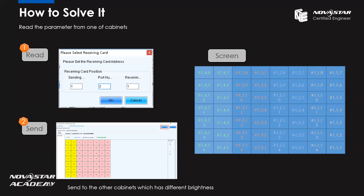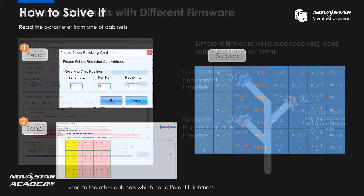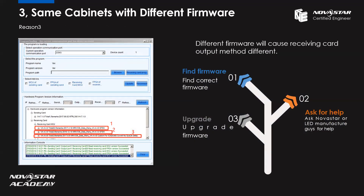This is about how we can solve the problem when the reason comes from the RCFG or RCFG-X file. Now let's see the next one. We have the RCFG-X file, but there's also another item saved in the receiving card: the firmware program. If you joined past training courses, you already know what the firmware program is. After you try the steps for brightness information and RCFG or RCFG-X file, if the problem is still there, maybe it comes from the firmware program in the receiving card. First, we suggest you find out the firmware program version.